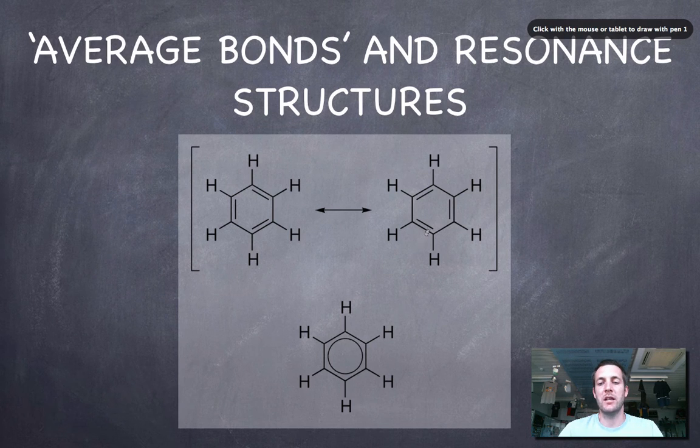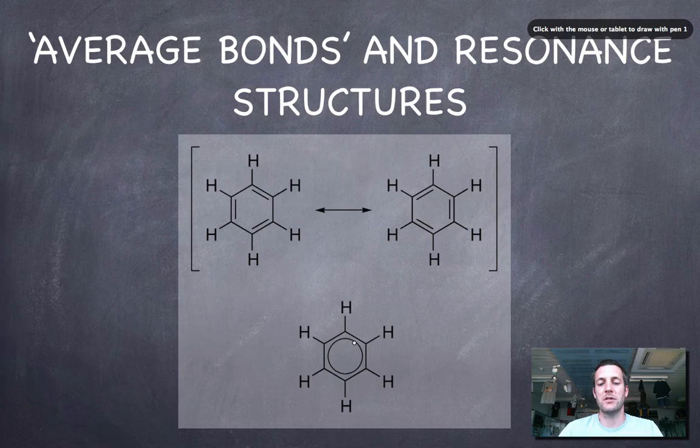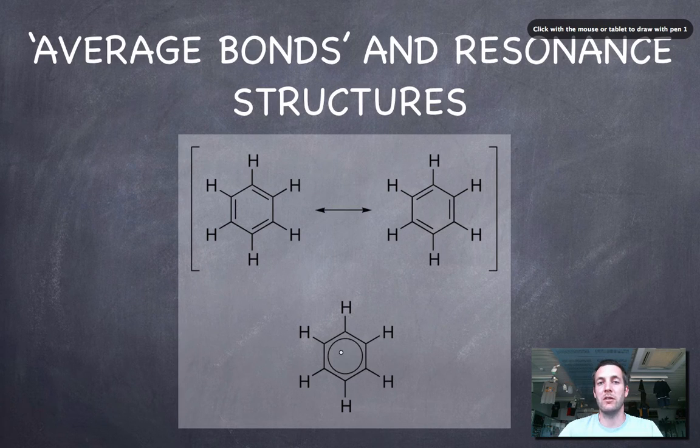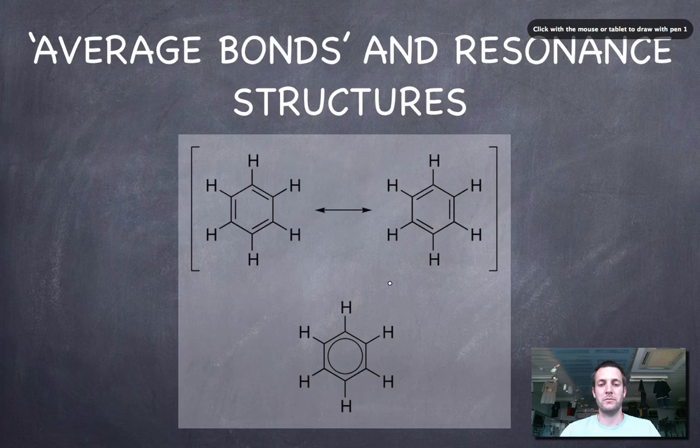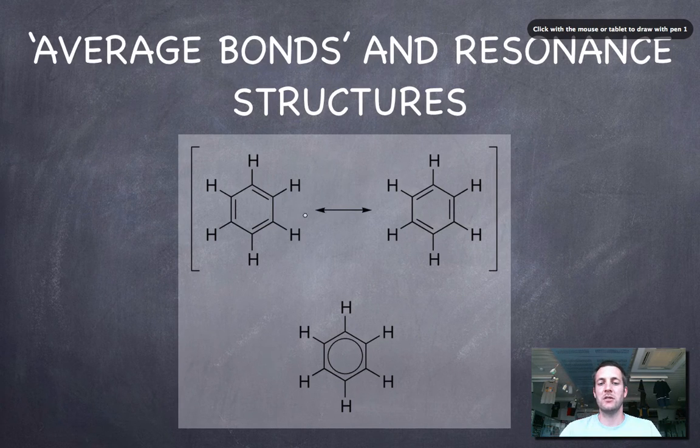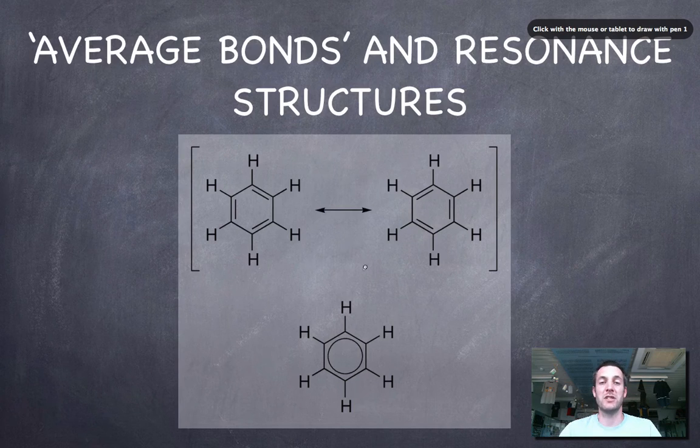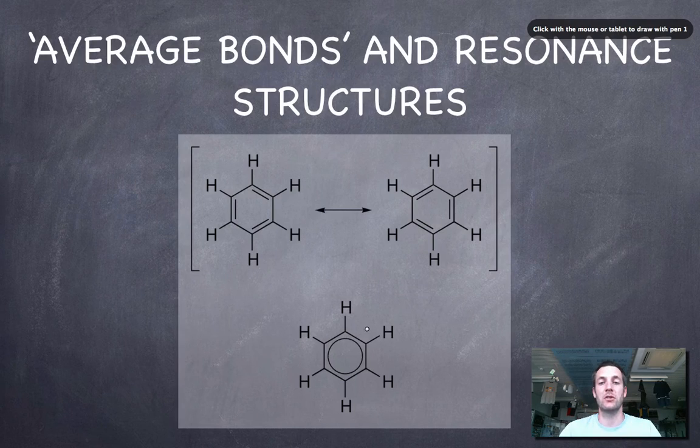This is showing that the electrons have delocalized. They spread around the ring rather than being in three particular places. The double bonds are kind of spread around the molecule and forming partial bonds. These are resonance structures, and the average of these resonance structures is showing where the electrons can move to or where they can delocalize to.